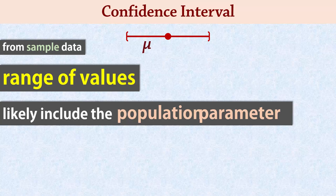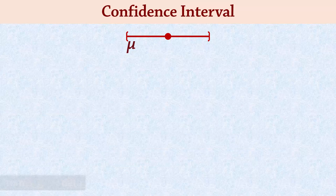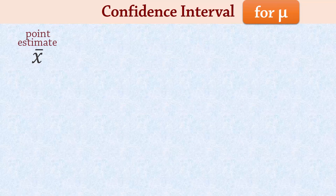The confidence interval for a population mean is determined by taking the sample mean, the point estimate, and subtracting and adding the margin of error to it.